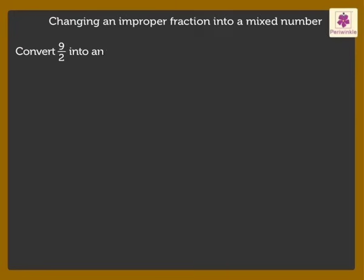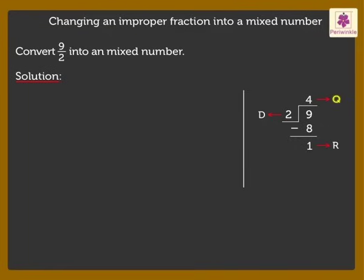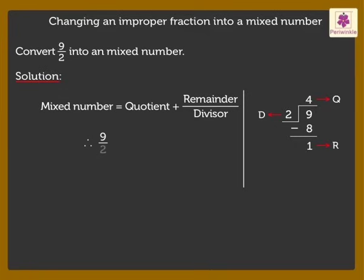Next, we will change an improper fraction into a mixed number. Look at the given fraction. To convert into a mixed number, we divide the numerator 9 by the denominator 2. We get the quotient as 4 and the remainder as 1. We write the mixed number as quotient plus remainder upon divisor. Thus, 9 upon 2 is equal to 4 plus 1 upon 2 which is equal to 4 and half.